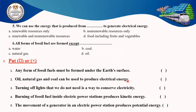Number five: we can use the energy produced from both renewable and non-renewable resources to generate electricity — both of them. Number six: all forms of fossil fuels include coal, oil, and natural gas, except water. Water is not a form of fossil fuel.